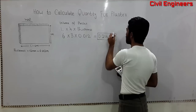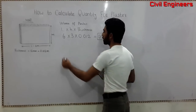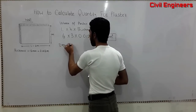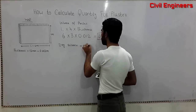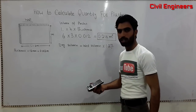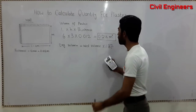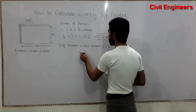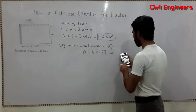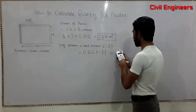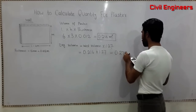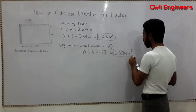Now I want to convert this wet volume value to the dry value. Dry volume is equal to wet volume multiplied by 1.27. In plaster, just multiply by the margin of 1.27. So 0.216 multiplied by 1.27 gives you 0.274 cubic meters — this is the dry volume of plaster.